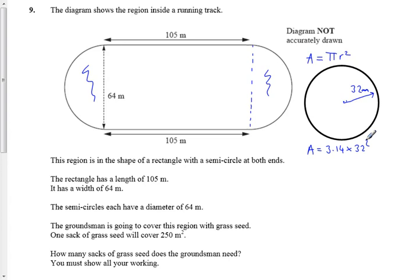So grab our calculator, 3.14 times 32 squared gives us the area of the curved bit, or the circle bit, the two semicircles, is 3215.36 meters squared.